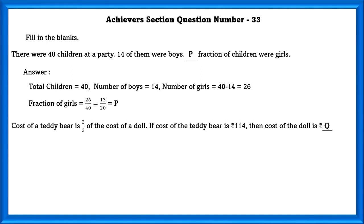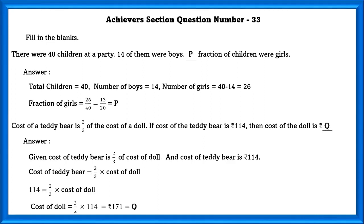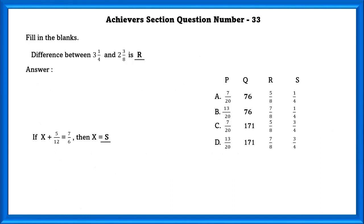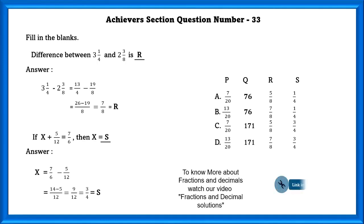If the cost of the teddy bear is 114, then the cost of the doll is q rupees. Given cost of teddy bear is 2/3 of the cost of a doll and cost of teddy bear is 114. Using this we can find the cost of doll, which equals q. Next, the difference between 3 and 1/4 and 2 and 3/8 is r. Converting to improper fractions and taking LCM to subtract gives r = 7/8. Next, if x + 5/12 = 7/6, then x = 7/6 − 5/12. Taking LCM and subtracting gives 9/12, which reduces to 3/4, that is s.